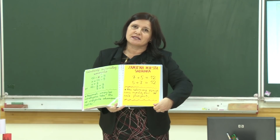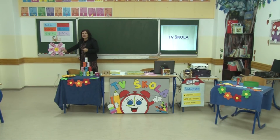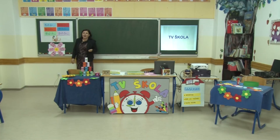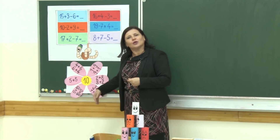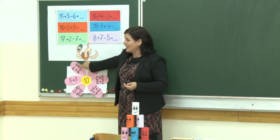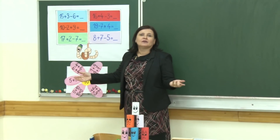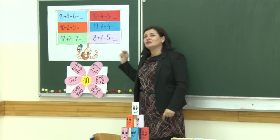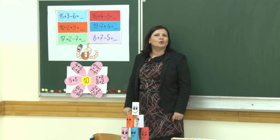Imamo i zamjenu mjesta sabiraka. Sjetite se dječaka i djevojčice koji su putovali autobusom, pa su imali deset konvertibilnih maraka. Ako je jedna karta dvije marke, još jedna dvije marke, to su četiri marke. A imamo deset maraka — koliko će prodavač karata vratiti? Vratit će šest konvertibilnih maraka. Ako imamo četiri plus šest, a zamijenimo mjesta sabircima — šest plus četiri — dobit ćemo isti broj.